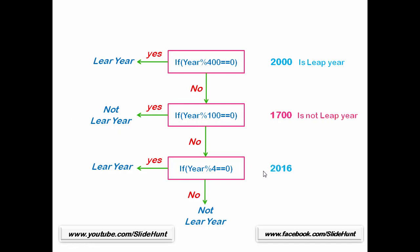Let us check another number, 2016. First, 2016 is not divisible by 400, so control moves on. 2016 is not divisible by 100, then control comes here — 2016 is divisible by 4, yes, so it is a leap year. Next, I am going to check 2017. 2017 is not divisible by 400, not divisible by 100, and not divisible by 4, so we can say 2017 is not a leap year. Hope you understand, let us move to the coding section.